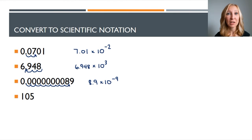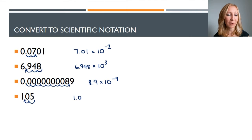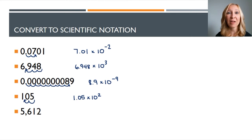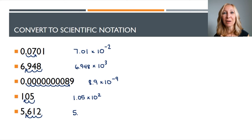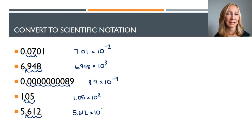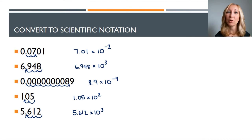Here we have one hundred and five. Moving the decimal to the left so that the first value is greater than or equal to one and less than ten, we get one point zero five times ten to the second power. The last number is five thousand six hundred twelve — we move the decimal to the left three places to get five point six one two times ten to the third.